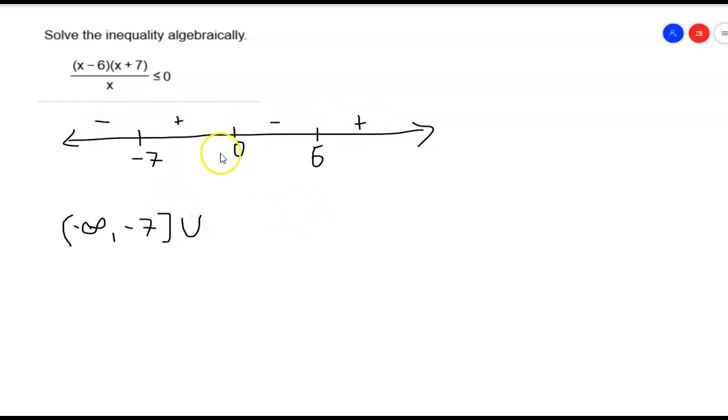So now I'm also going to go from 0. Now I do not include 0 because 0 makes this undefined because it puts a 0 in our denominator.